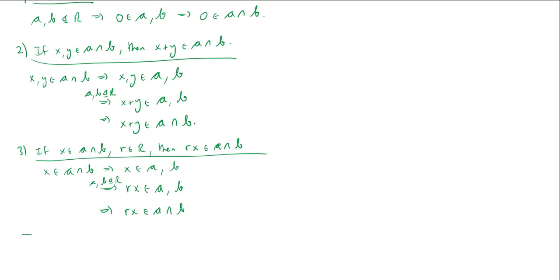And the combination of all three of these things now implies that A intersect B is an ideal of R. There we go. Proof is done. Easy peasy, lemon squeezy.